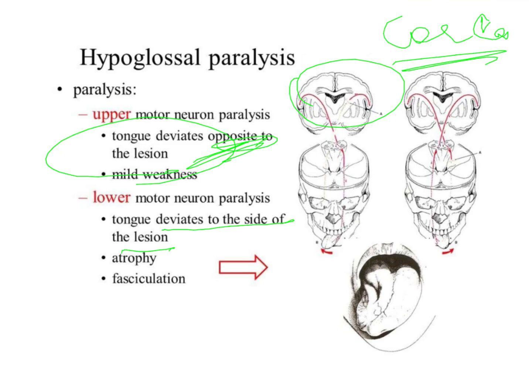In lower motor neuron paralysis, when the paralysis is occurring in the brain stem, if it is on the right side, the entire organ will shift to the right side. Whereas, if it is an upper motor neuron and you have a right side paralysis, the entire tongue will shift to the left side. You always remember that it moves to the same side. However, if the question is very specific as to an upper motor or a lower motor neuron, then you have to select the right answer.